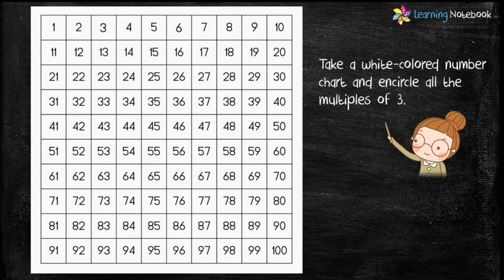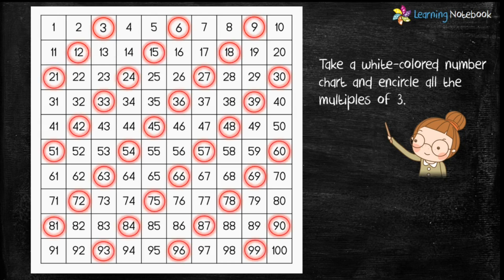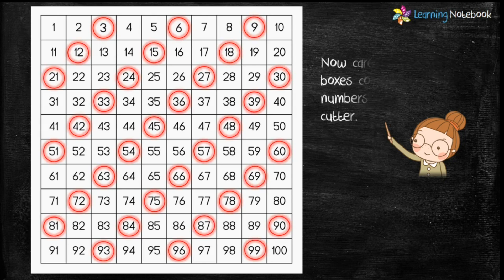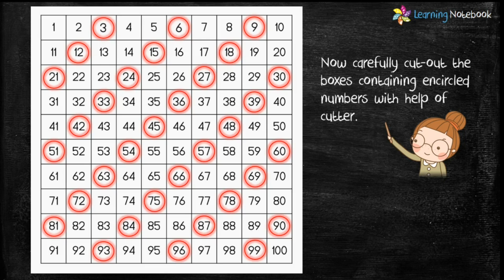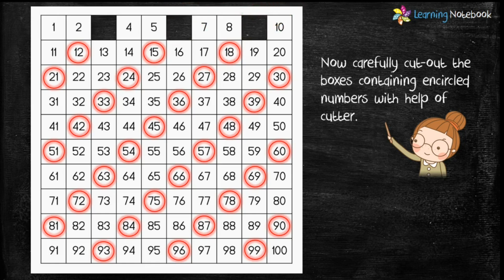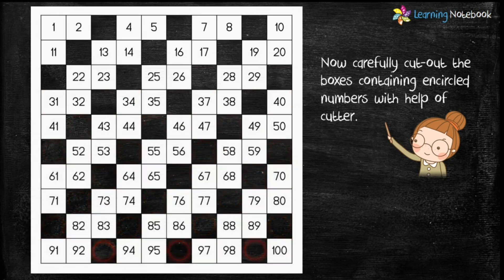Take a white colored number chart. Since we have to find the LCM of 3, 8, and 12, let's first encircle all the multiples of 3 up to 100 on this sheet, like 3, 6, 9, 12, 15, 18, and so on. Now carefully cut out the boxes containing the encircled numbers with the help of a cutter — you may take your parents' help for this. So when you have cut out all the multiples of 3, the sheet looks like this.